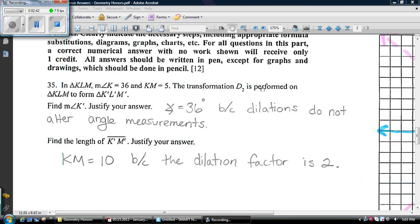35. Okay. Look, this is a dilation. Dilations don't change angle measurements. They just change the size of the image. So angle K is going to stay the same. The dilation factor was 2, that's what that number right there is, which means you double everything up. And KM is 2.